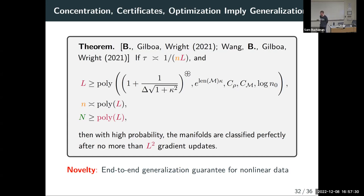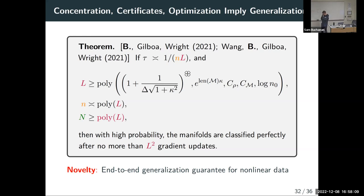Regarding the question about global versus local descriptions: you're right that the clover number and kappa are local descriptions. You could have two curves with the exact same local description where one problem setting is linearly simple and the other is knotted. They would have the same sample complexities here. The question is about whether there's intuition for combining more global separation properties into the analysis. That's a very good question — the dependence of the rate on some of these parameters may be worth thinking about more.